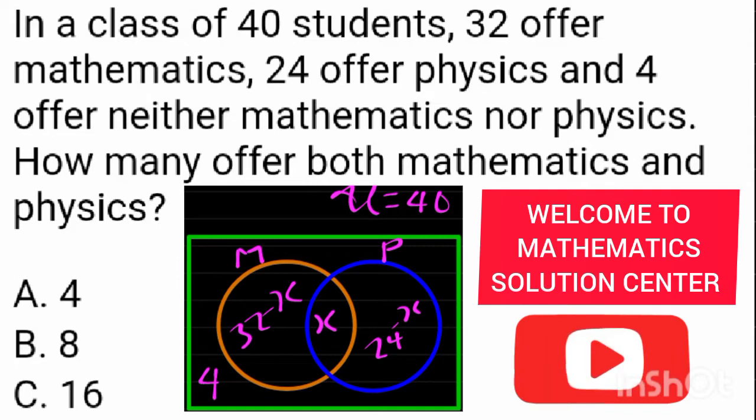Today we are going to be looking at a question that says: In a class of 40 students, 32 offer mathematics, 24 offer physics, and 4 offer neither mathematics nor physics. How many offer both mathematics and physics?